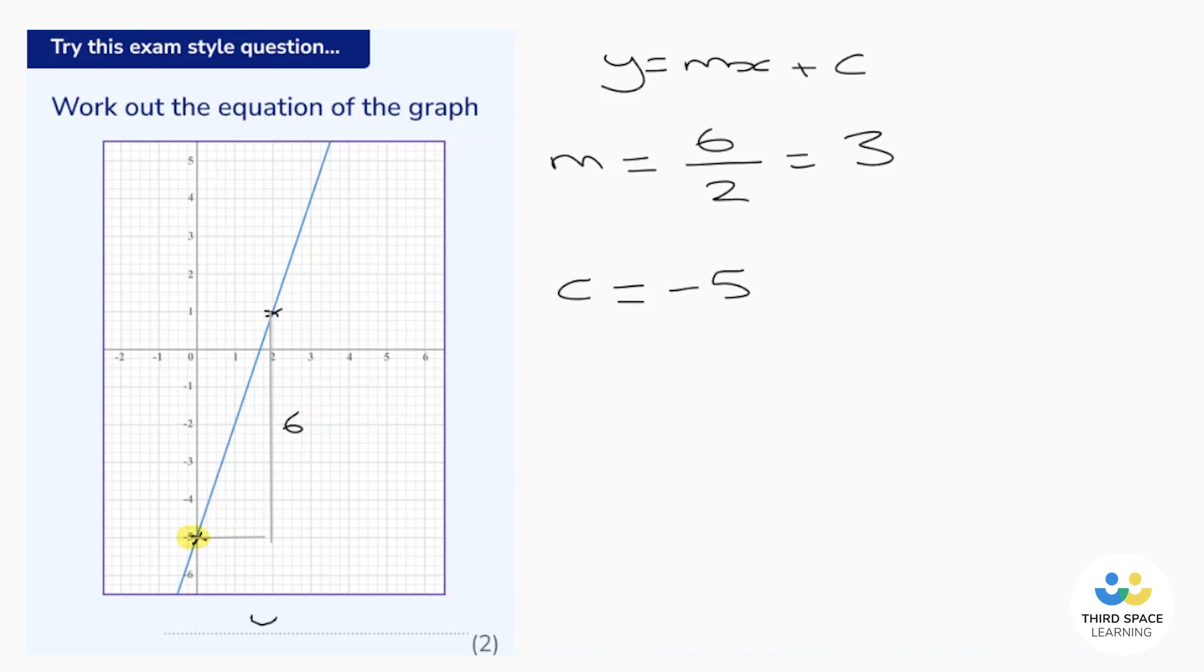Let's put it all together. And we get y equals 3x, take away 5. Take great care to make sure that you include the x there. The gradient is 3, but the equation is y equals 3x, take away 5.